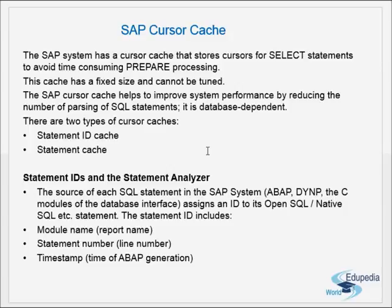The SAP cursor cache stores these cursors for select statements, which avoids time-consuming prepare processing. If the execution plan for a statement was already generated, next time you run the same SQL statement the plan need not be generated again. This cache has a fixed size and cannot be tuned. The SAP cursor cache helps improve system performance by reducing the number of parsings of SQL statements, and it is database dependent.